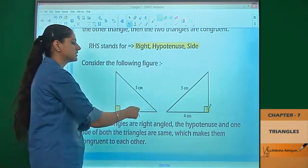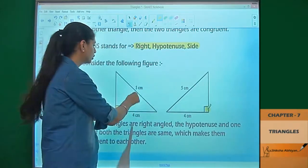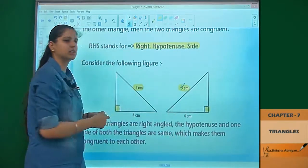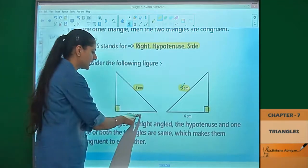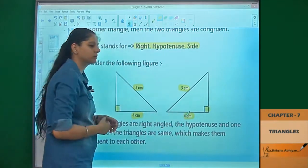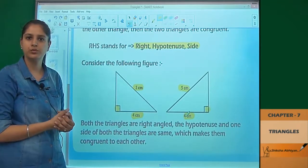Next, this is the hypotenuse. Both hypotenuses are five centimeters. So the H criteria is fulfilled. Now one side is four centimeters, four centimeters. So the S criteria is also fulfilled.